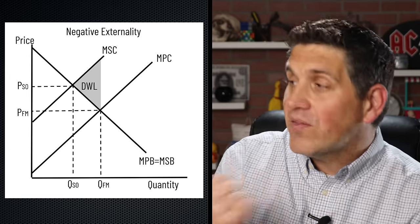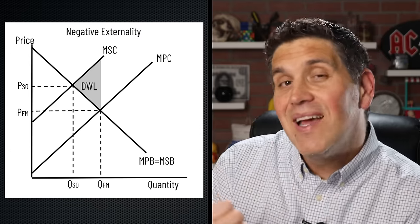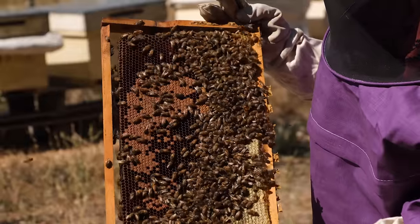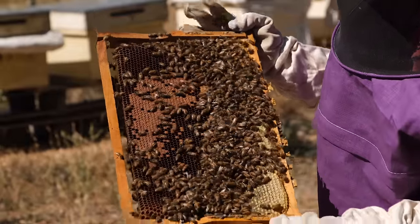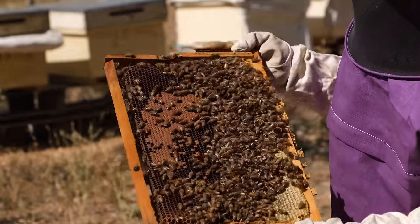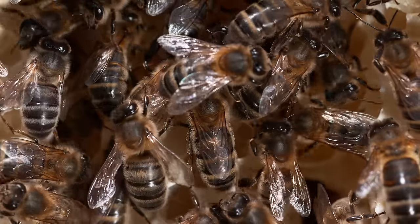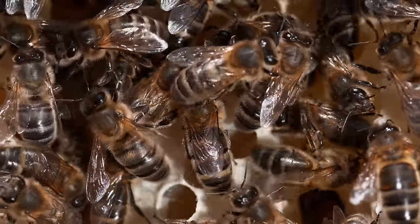So technically, drawing the negative externality from smoking like this is actually incorrect. Let's go talk about positive externalities and the idea of honey. When a honey producer takes care of bees, there's benefits to them — they can sell that honey — but there's also external benefits to the rest of society because now bees can go do what bees do.